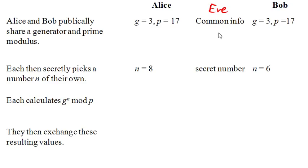Now each of them is going to secretly pick a number of their own. So I'm going to have Alice pick 8 and Bob pick 6, but they could pick any number they want and most importantly, only they know it. So Bob and Eve neither of them know Alice's number, and neither Alice or Eve knows Bob's number.